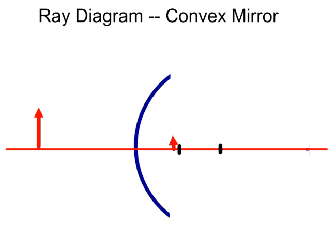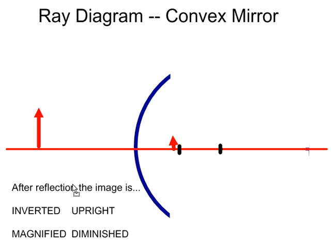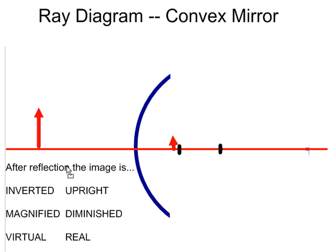So here's the terms that we use to describe the new image. After reflection, the image is, well, first of all, is it inverted or upright? Well, you can see the new arrow is in the same direction as the old one. So I'm going to go ahead and I'm going to circle upright. It was not turned upside down, so it's upright.